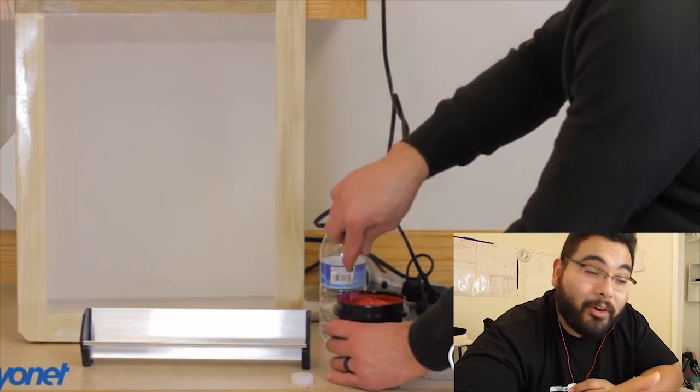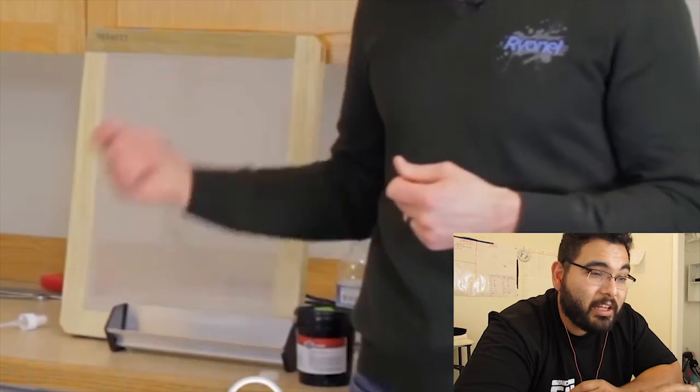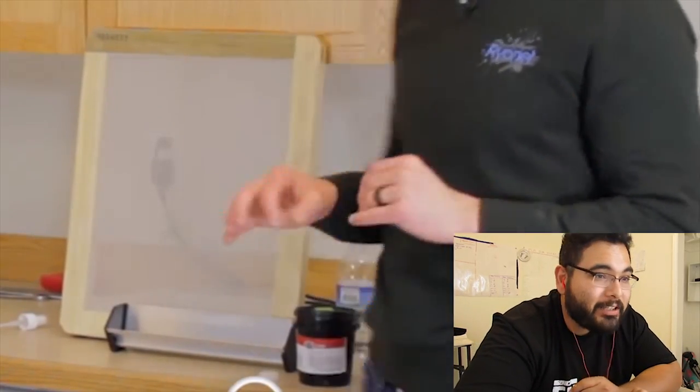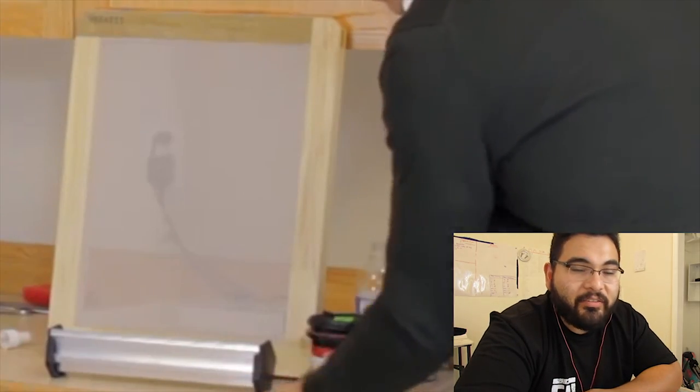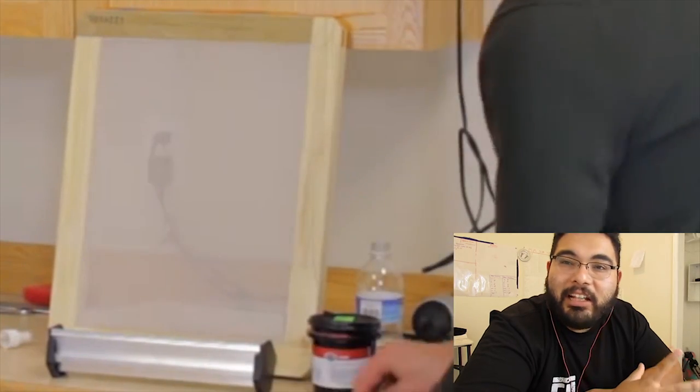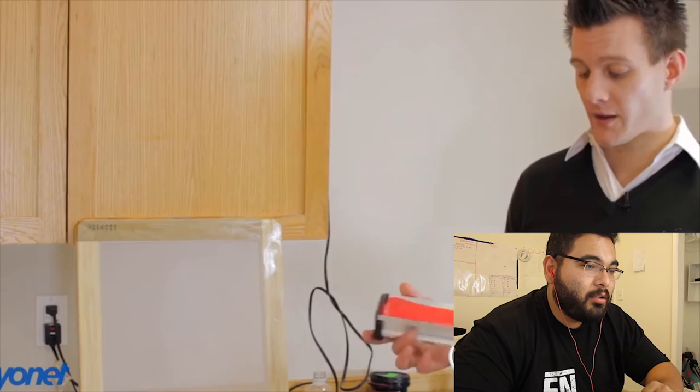You have to stir it, make sure it's all the same color, and just let it sit for two hours to get rid of all the air bubbles. That's called a scoop coater right there.